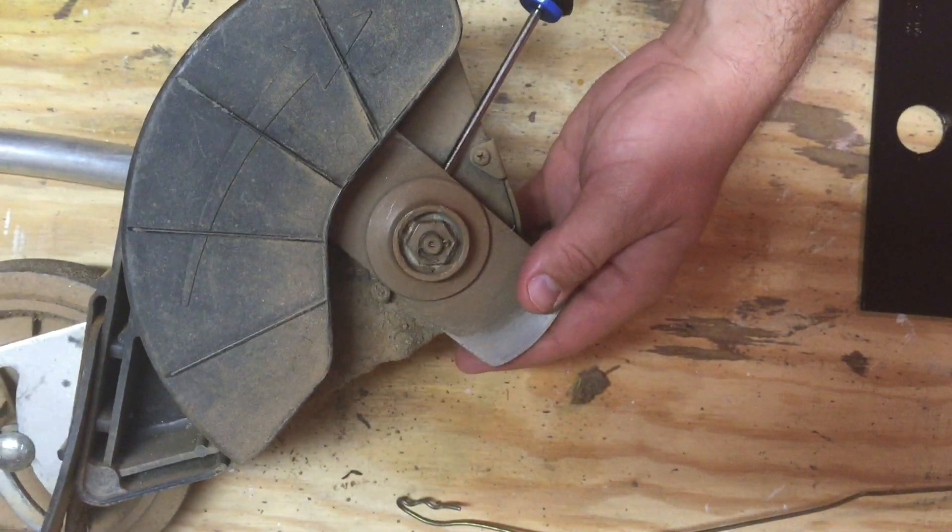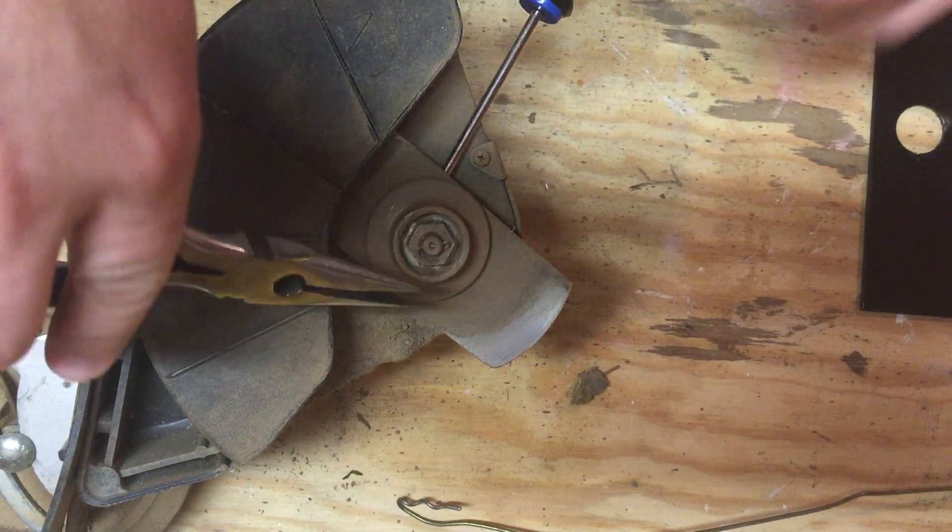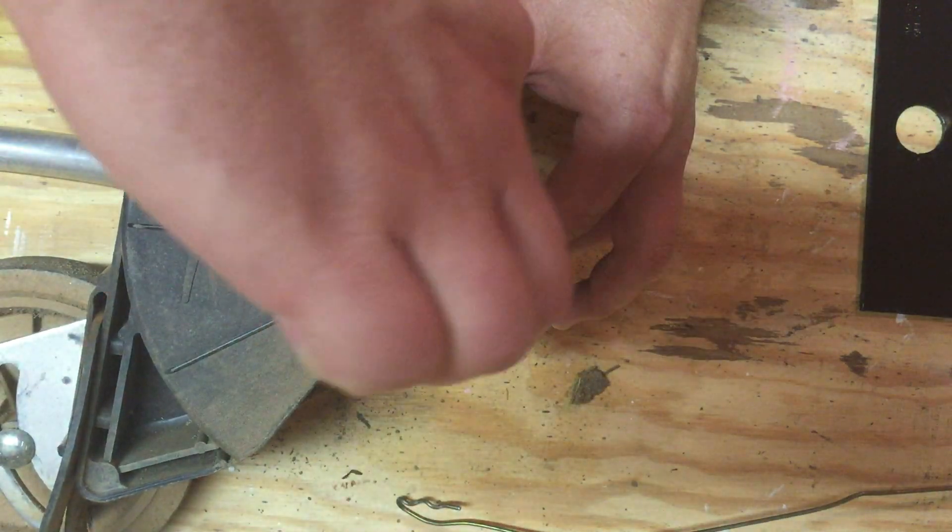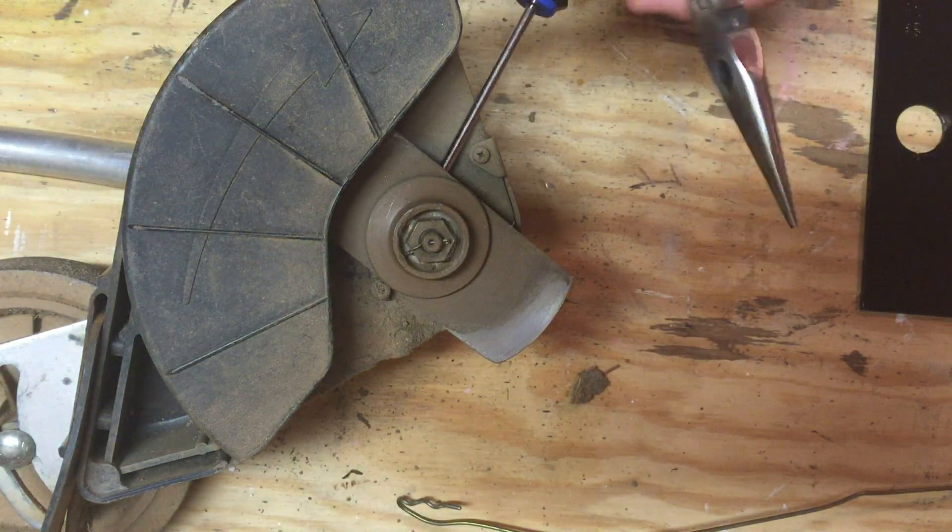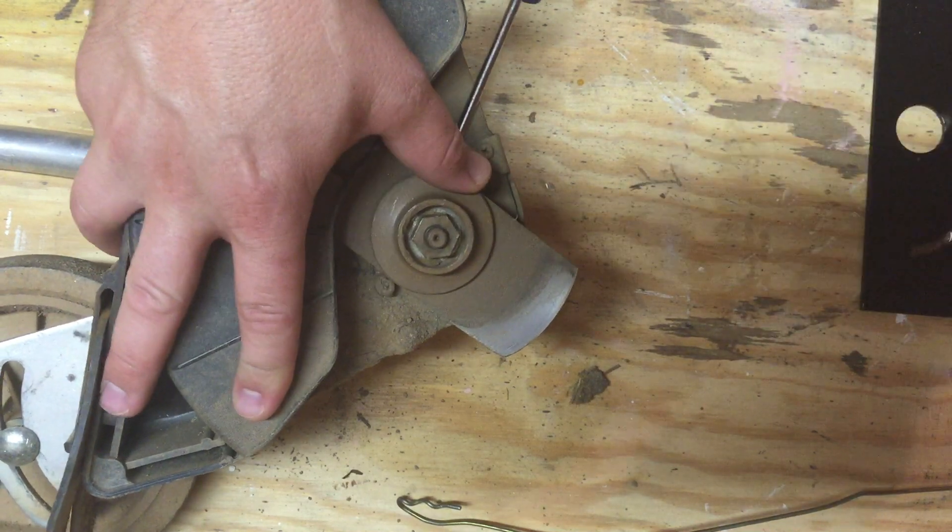The next step is to straighten out the cotter pin or the split pin. Different people call it different things. But straighten it out and take your pair of pliers and pull it out.